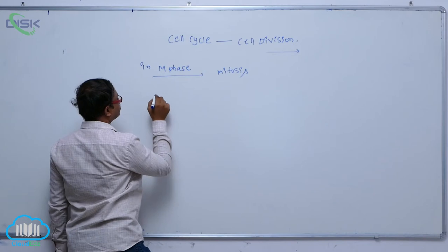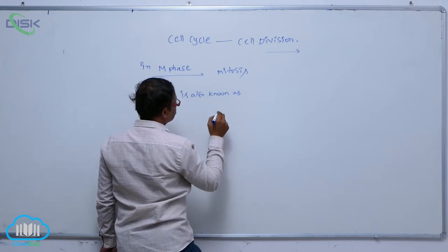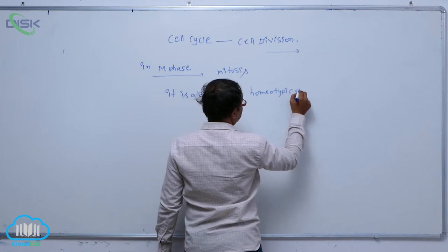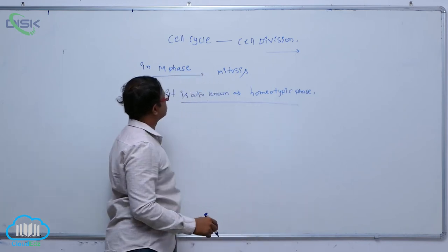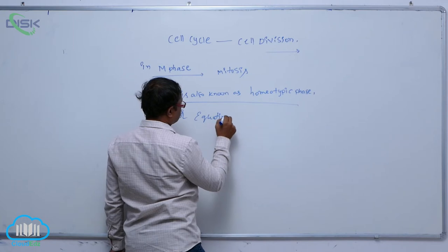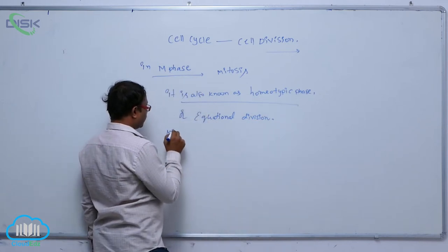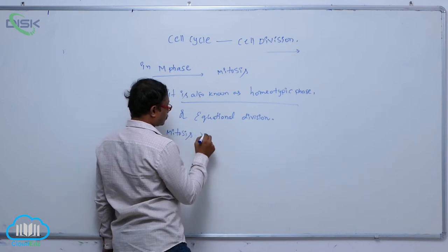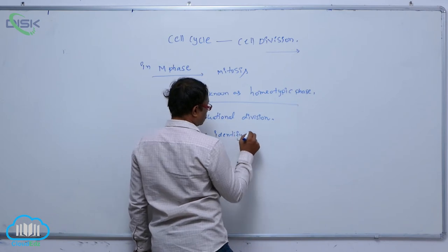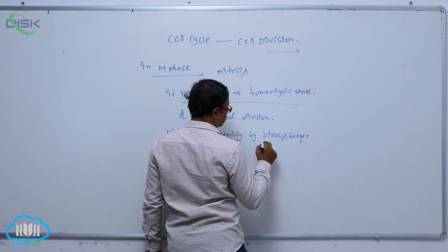Mitosis is also known as the homeotypic phase and equational division. It was identified by Strasburger.